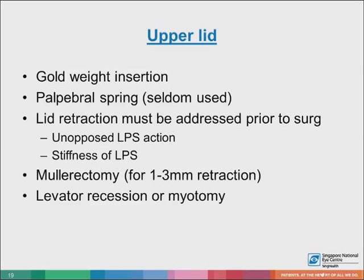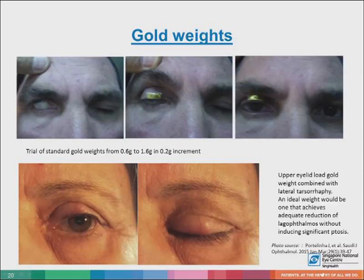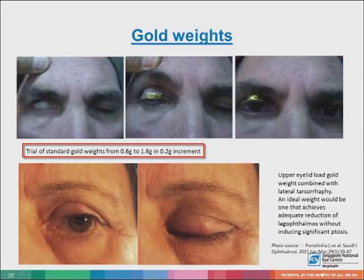It is also very common to have lid retraction in seventh nerve palsy, caused by Hering's law of yoked levator action and stiffness of the levator. If retraction is present, we need to consider a mullerectomy or even a levator recession. Gold weights come in 0.6 gram increments of 0.2g. The ideal weight is one that achieves adequate reduction of lagophthalmos without inducing significant ptosis.